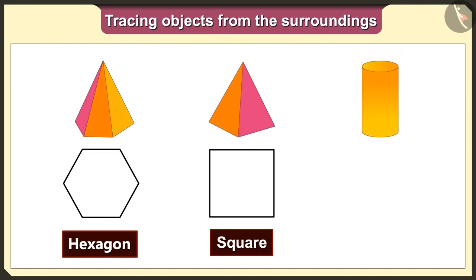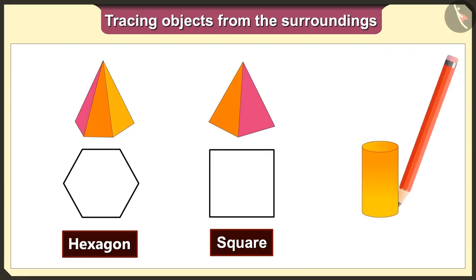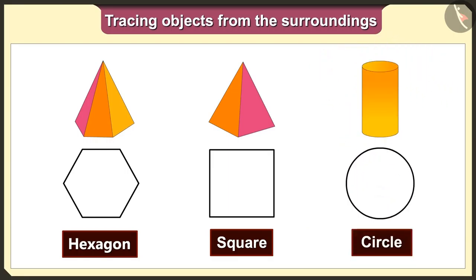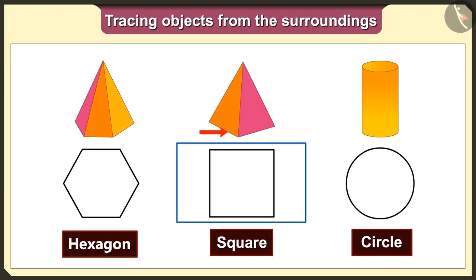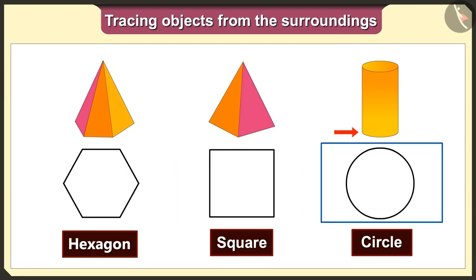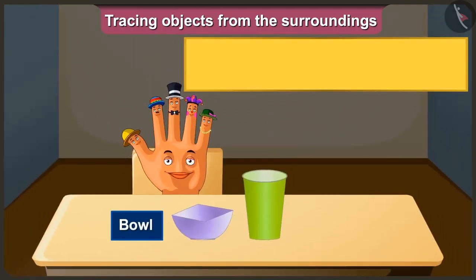This is a cylindrical shape. The base of a cylinder is a circle, so we will get a circle shape when we trace the cylinder. So when we trace these solid shapes, we get the shapes hexagon, square, and circle according to their bases.